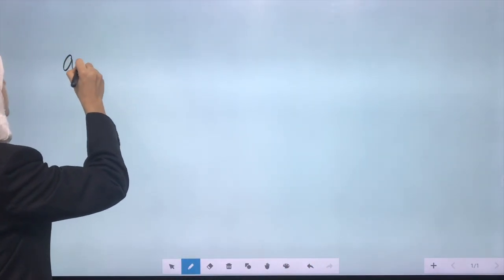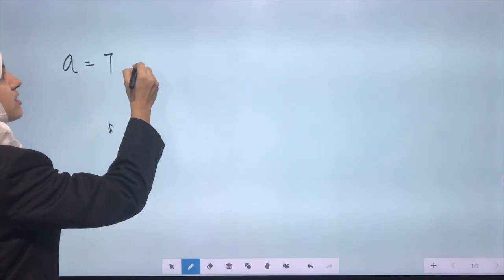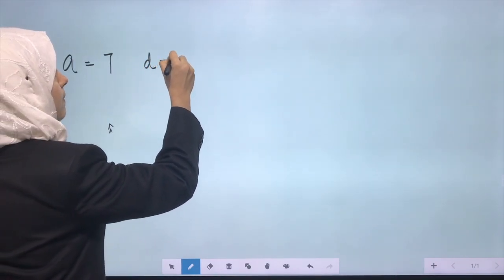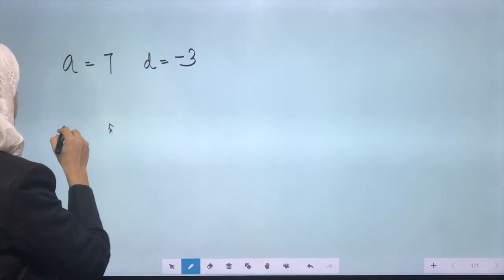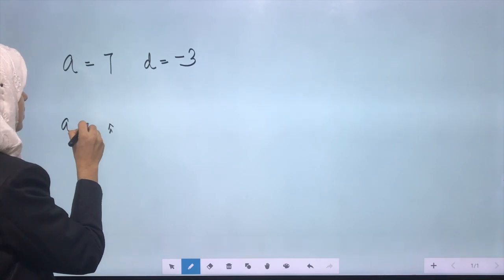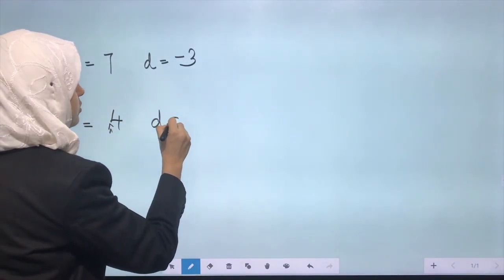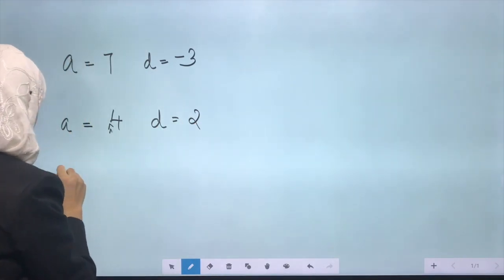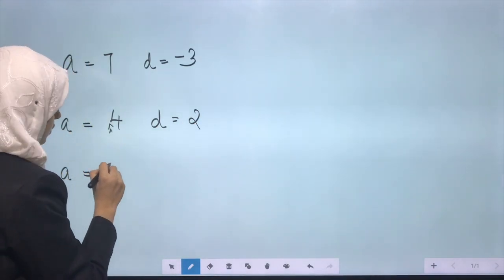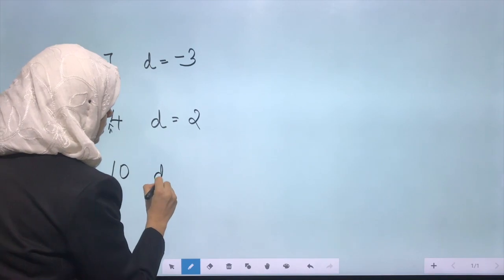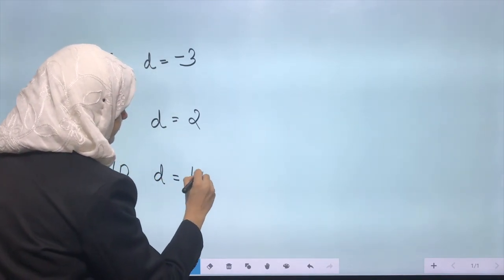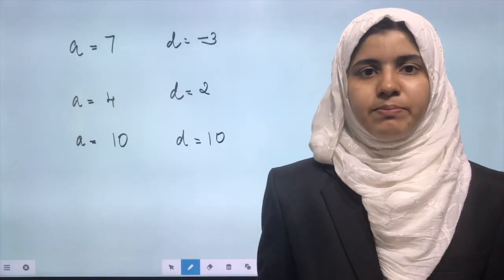Now I'll give some first term and common difference, you have to write the AP. So a = 7 and d = -3. Next AP is a = 4 and d = 2. Third one: a = 10, d = 10. So now let's complete this. We are given first term and common difference—that is, we are given two information so we can complete this AP.